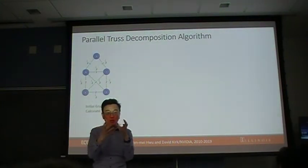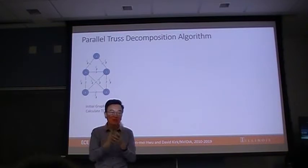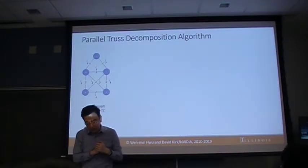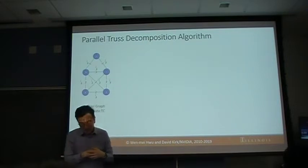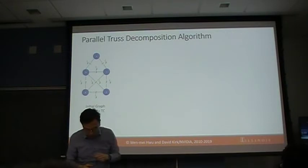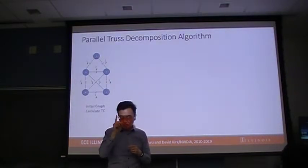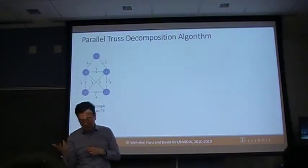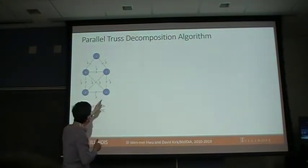When you have many triangles involved in a structure, you start to have very strong relationships among four or five nodes. The first meaningful one is a three-truss. A two-truss would just be a triangle. For a three-truss, the definition is that every edge in the truss will be involved in at least k minus 2 triangles. So a three-truss means each edge is involved in at least one triangle, and a four-truss means at least two triangles.